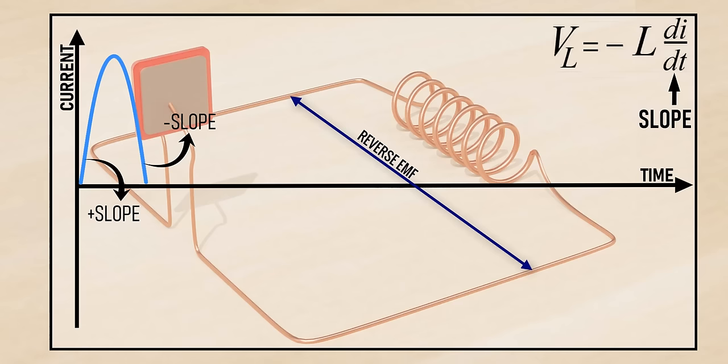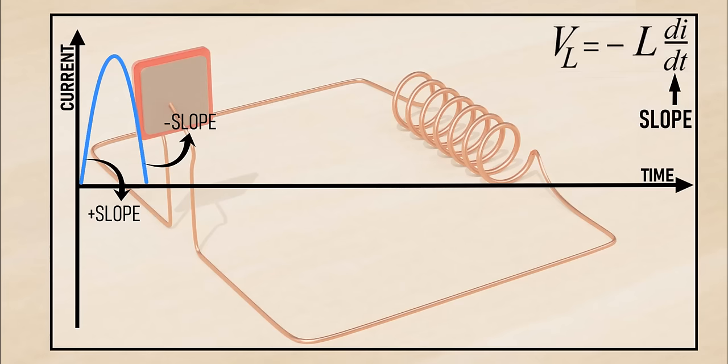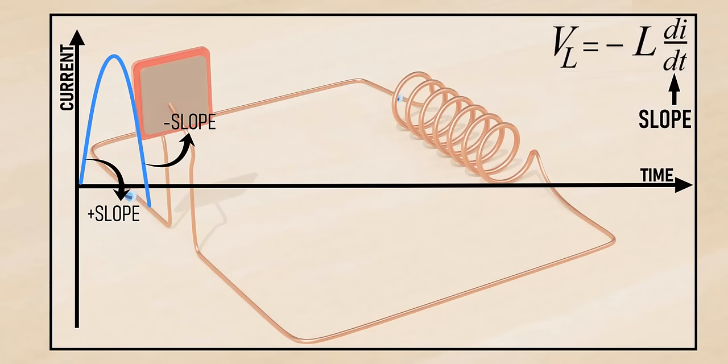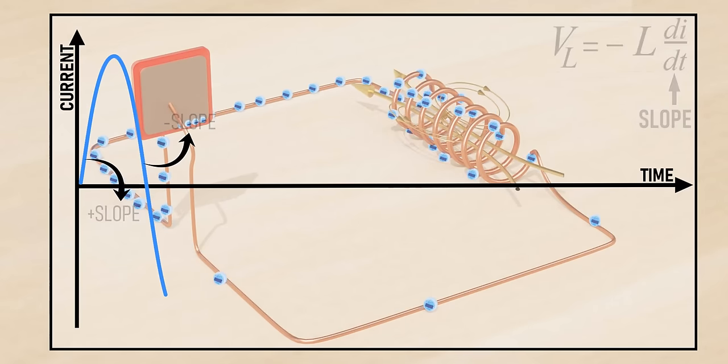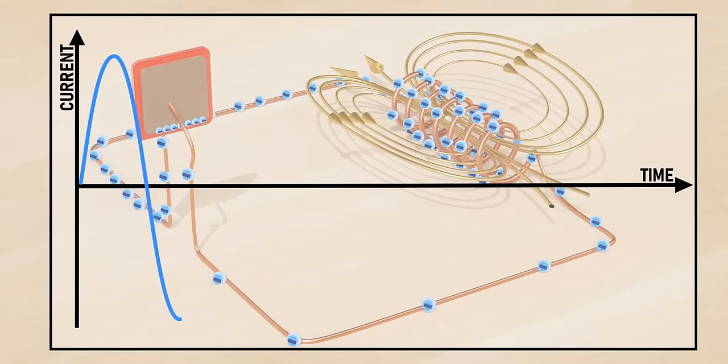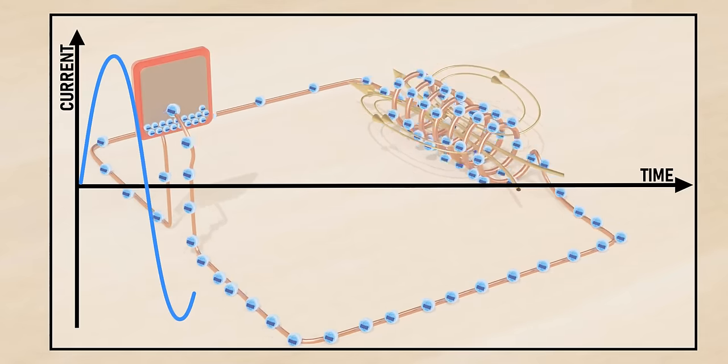This reverse EMF charges the capacitor with the opposite polarity. In the next half of the time period, the capacitor will be fully charged with the reverse polarity. This also means that the current flow will be in the reverse direction for the next half.